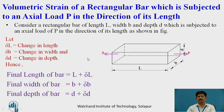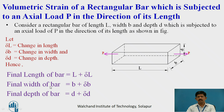We will consider volumetric strain for a rectangular bar when it is subjected to an axial load P in the direction of its length. The rectangular bar has length L, breadth B, and depth D. Due to force P in the direction of its length, let the change in length be delta L, change in width be delta B, and change in depth be delta D. Therefore, the final dimensions of the bar are: length L plus delta L, width B plus delta B, and depth D plus delta D.